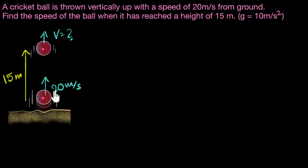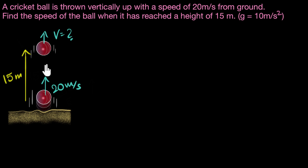At the ground, the ball has some kinetic energy. As the ball goes up, its kinetic energy reduces because the ball slows down. But that kinetic energy gets converted to potential energy, because as the ball goes higher and higher it has more and more potential energy. So the kinetic energy reduces while potential energy increases, and the total energy does not change — that's the energy conservation principle.